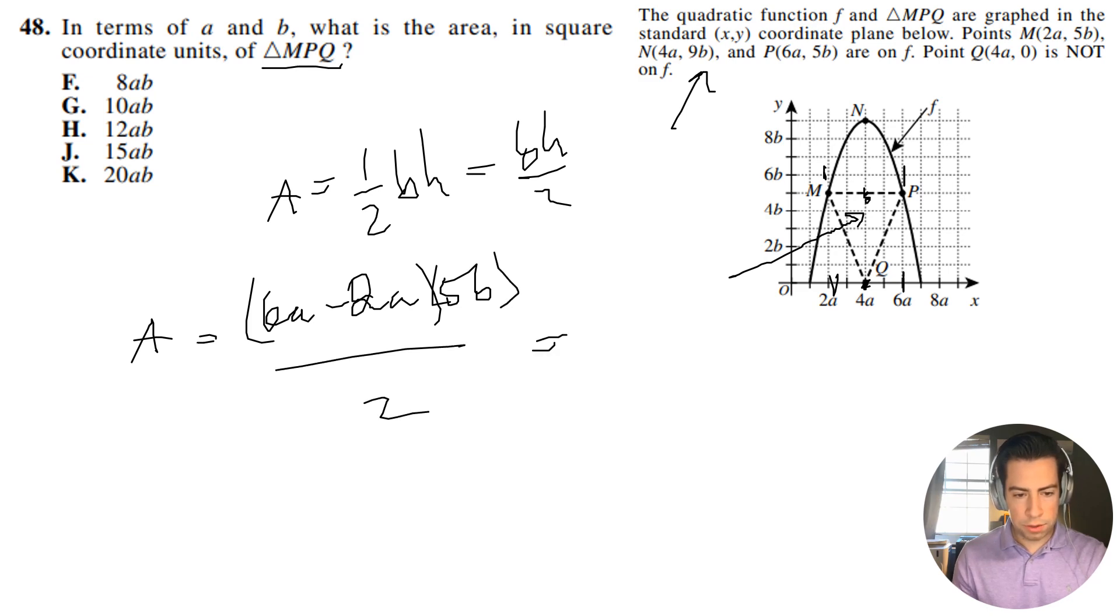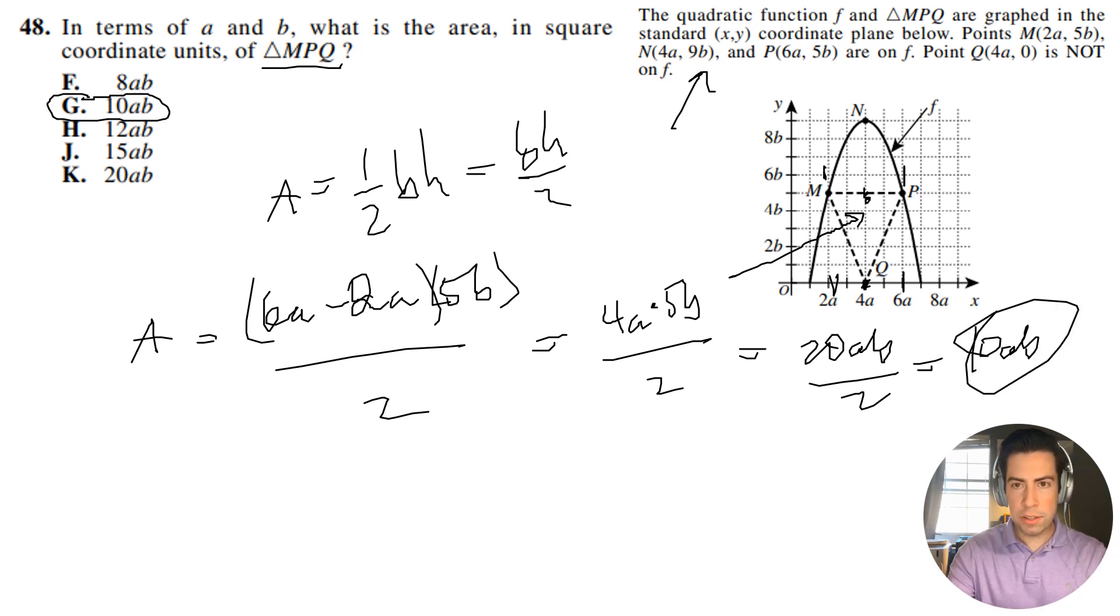So I'm going to have 4A times 5B divided by 2. That is going to be 20AB divided by 2, which is 10AB. All right, so that's our answer, 10AB. It's going to be answer choice G. Let's move on to the next problem.